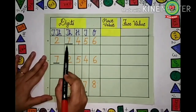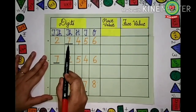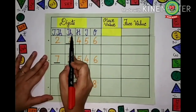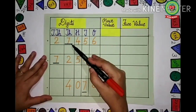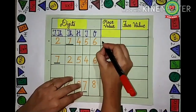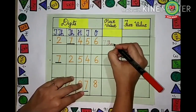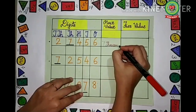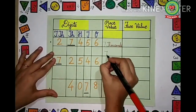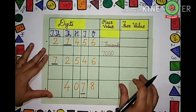Which is the underlined digit? That is 7. Let us see which place value 7 is under. 7 is coming under the thousands place value. So the place value of 7 is 7,000's — that is 7,000. Or we can write down 7 with three zeros, because thousands has three zeros.